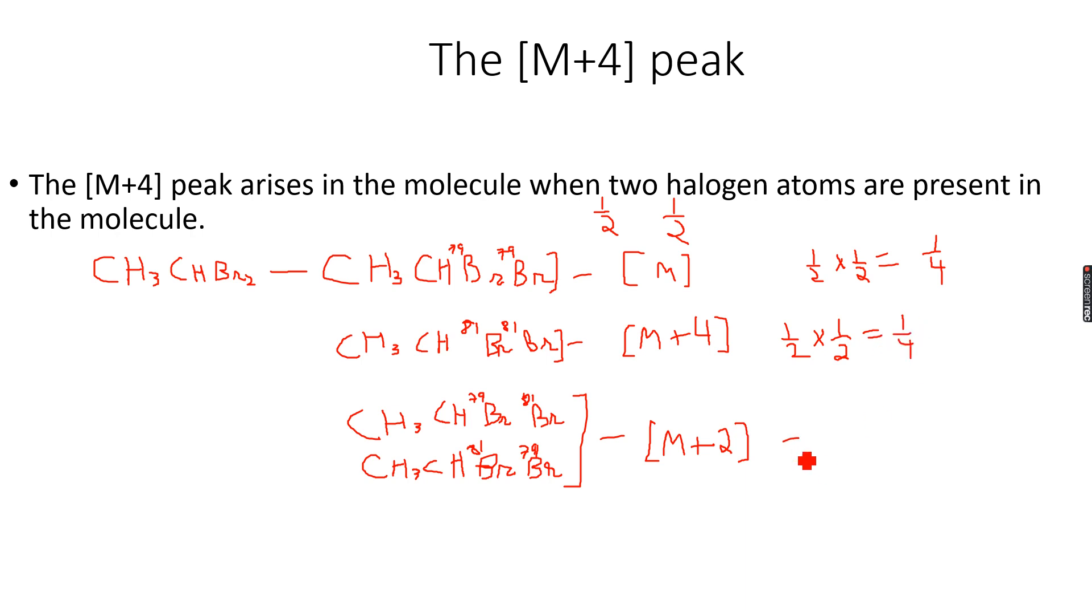In this case, I have 1/2 times—I put the equal sign in the wrong place. In this case, I have 1/2 times 1/2 for one molecule, and since I have two molecules contributing to the same peak, I will multiply this by 2. I will get 1/4 times 2, which is also equal to 1/2.